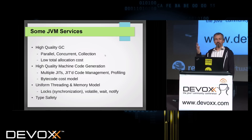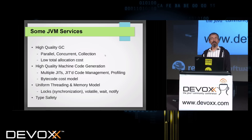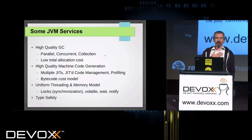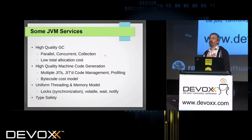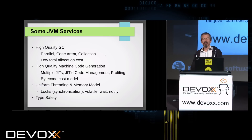There's a high-quality GC — parallel, concurrent, incremental collectors with reasonably good low-cost allocation. When Java started, that was just not possible; now it's assumed. High-quality machine code generation is something I had a very personal hand in. That was again a thing that no one believed you could do at runtime, and now it's just assumed that the code quality matches what you get out of a standard static compiler at -O2 level, including profiled code and all the code management that goes with it.